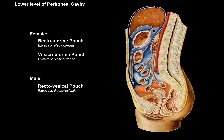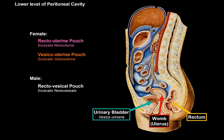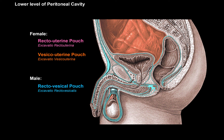The last topic is the lower level of the peritoneal cavity. Females have two pouches and males have one. In this female model, once we locate the uterus, urinary bladder, and rectum: the rectouterine pouch lies between the rectum and the uterus, while the vesicouterine pouch lies between the urinary bladder and the uterus. In males, since there's no uterus, there is one pouch between the rectum and urinary bladder called the rectovesical pouch.